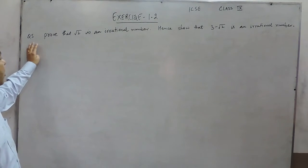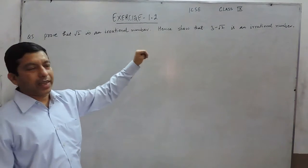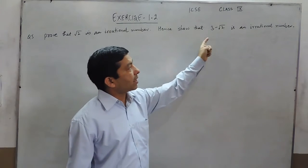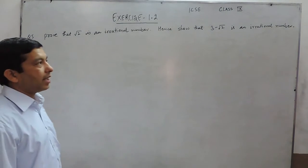Hello everyone. Question number 5 is: prove that √2 is an irrational number. Hence show that 3 - √2 is also an irrational number.